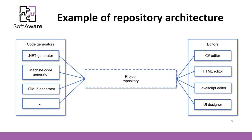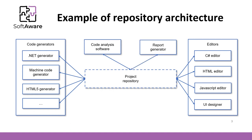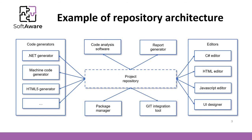Besides these major subsystems, powerful IDEs make use of code analysis. For example, static analysis allows detecting security issues during the coding stage. Report generators can help in automating reporting. If we talk explicitly about Visual Studio, we can talk about the NuGet package manager, which allows searching and installing libraries for our software easily. And of course, modern development environments include Git repository integration. All these tools work absolutely independently — they just need access to the project repository.